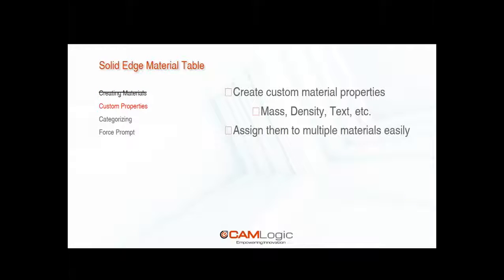Custom properties. You can create custom material properties while you're in the material table. Those things could be mass, density, text — there are a lot of different variables you can use within the properties for the material that will show up later when we get into the drafting portion. You can also assign multiple materials a property that you're creating at the same time, which will save you some time. You can also do that from within that Excel spreadsheet.